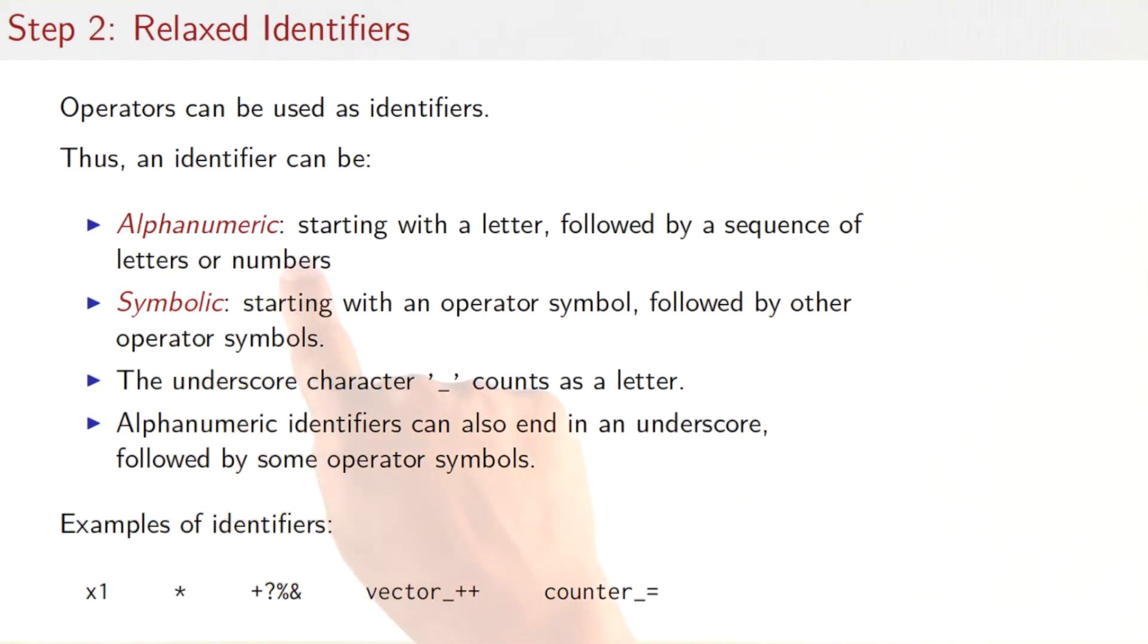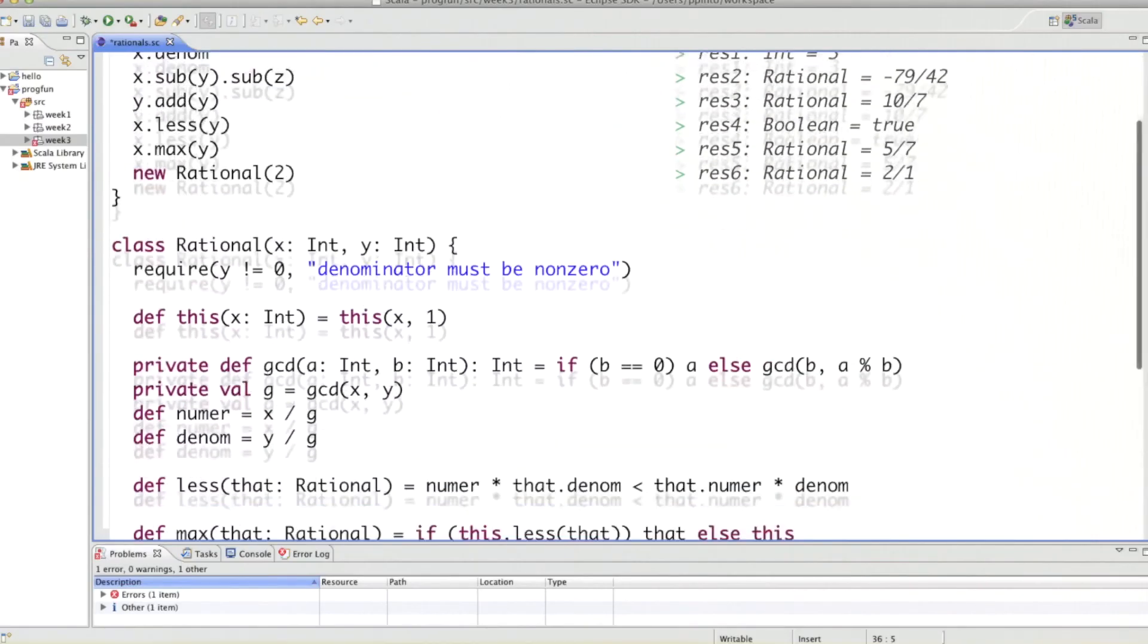In programming languages, an identifier is alphanumeric—it starts with a letter and is followed by a sequence of letters and numbers. In Scala, operators are also treated as identifiers. To achieve that, we have introduced a second form of identifiers, which we call symbolic. Such an identifier starts with an operator symbol, such as plus or minus, a question mark, and is followed by other operator symbols. In that definition, the underscore character counts as a letter. As a final twist, we can also mix alphanumeric and symbolic—we can start with an alphanumeric identifier, followed by an underscore, then followed by some operator symbols. Here are some identifiers in Scala: x1, times, plus, question mark, percent, ampersand, vector underscore plus plus, or counter underscore equals. All these names are legal identifiers in Scala.